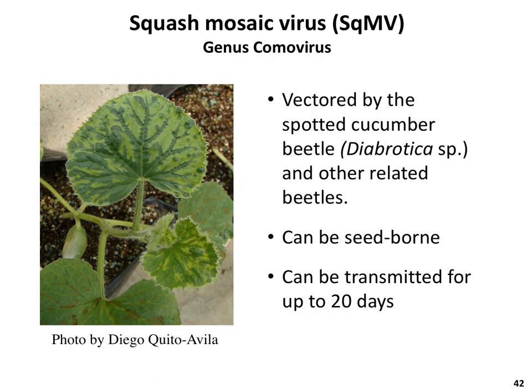Squash mosaic virus is relatively common in the southeastern United States and causes mosaic symptoms similar to those produced by other viruses. Unlike the others, squash mosaic virus is transmitted by cucumber beetles. After being acquired during feeding, this virus is retained by the beetle for up to 20 days and can become seed borne as well, meaning seeds from infected plants can grow into new infected plants.